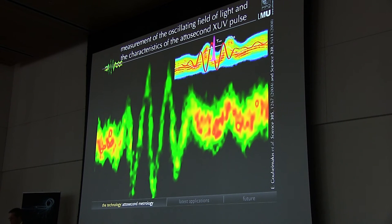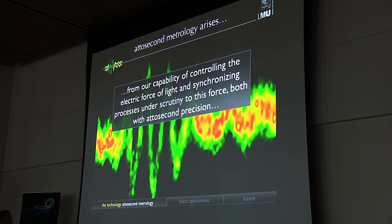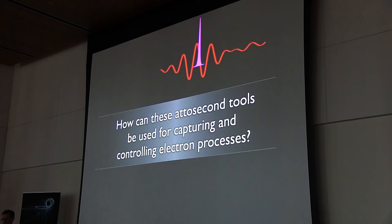So just to sum up this part from our capability of controlling the electric force of light and synchronizing processes under scrutiny to this force, both with attosecond precision, basically the capability of performing measurements on the attosecond time scale arises. And I would like to show you a few examples for how this is working, for how we can actually use these attosecond tools for capturing as well as controlling electron processes.